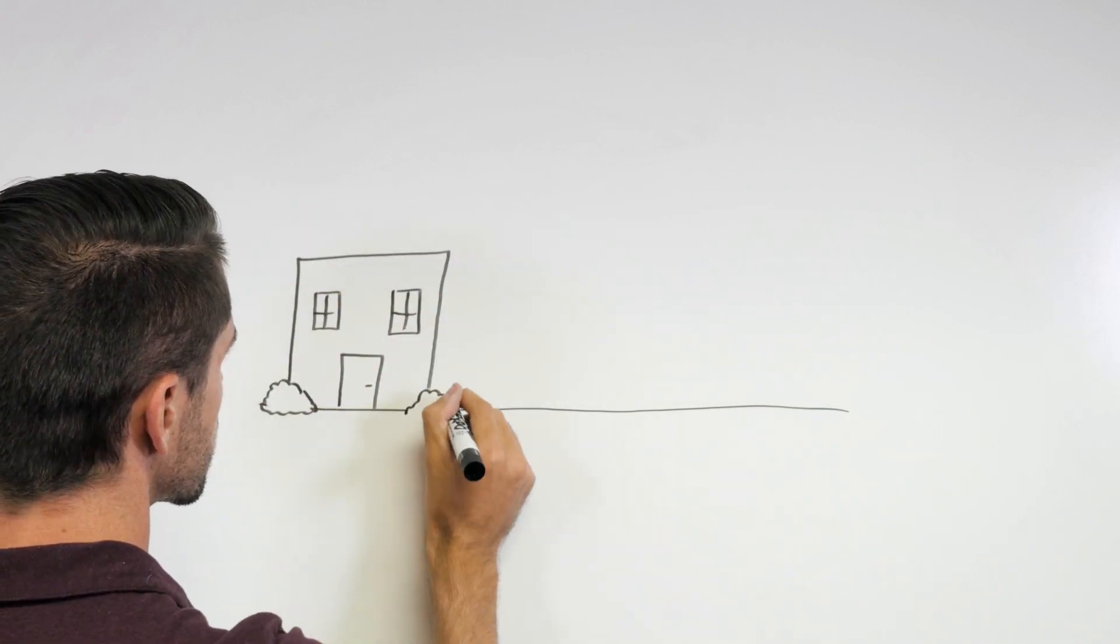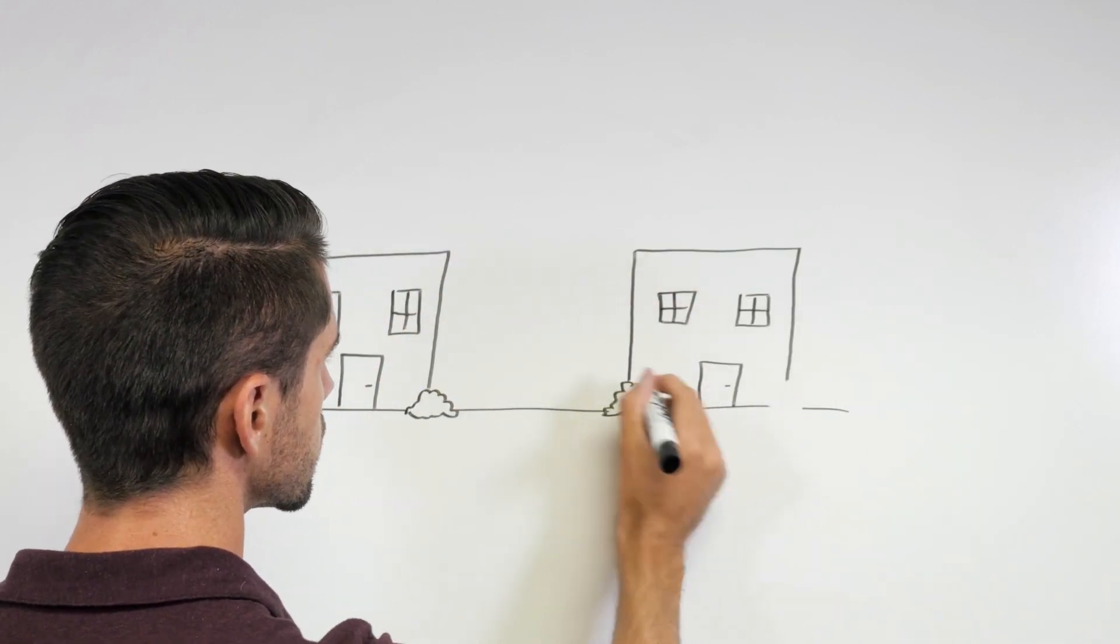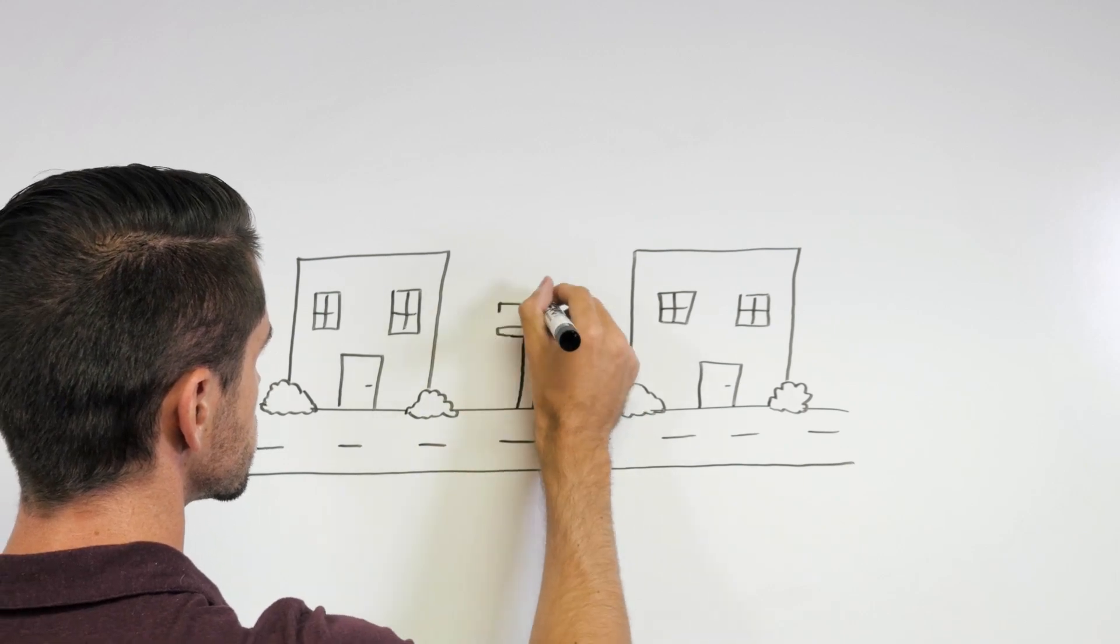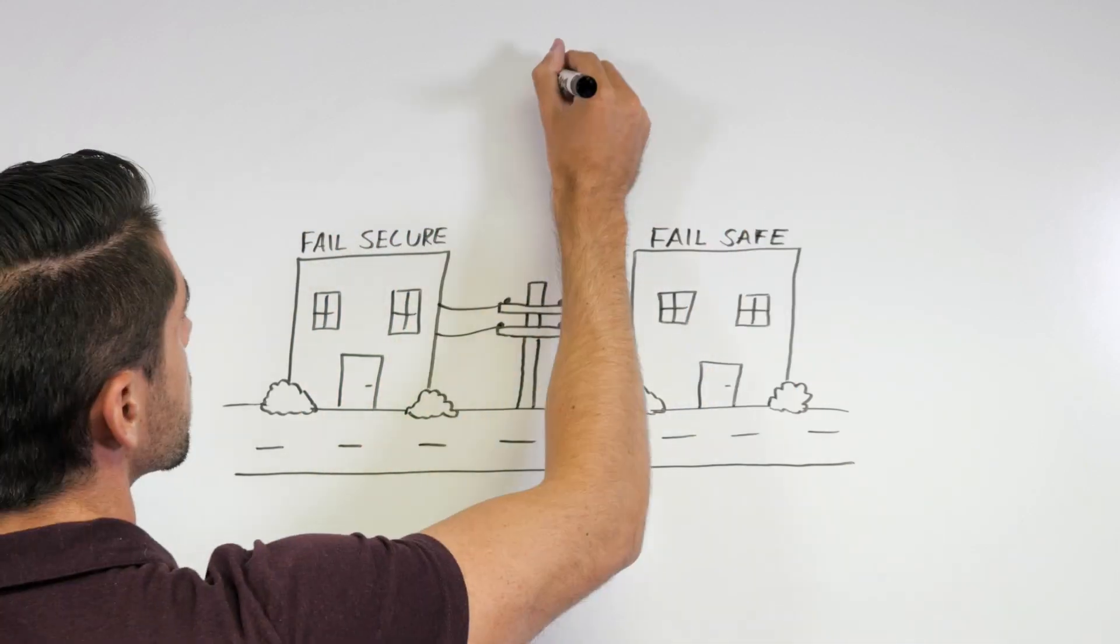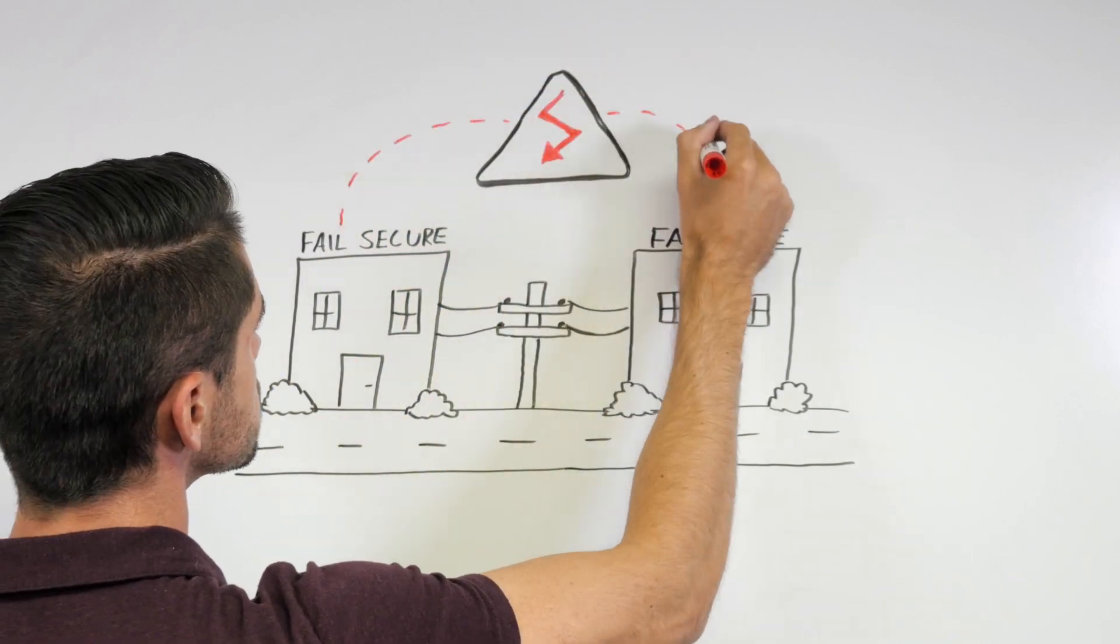In the world of electrified door hardware, knowing the difference between fail secure and fail safe is important. These two terms are used to describe how the door works from the key side with the presence or removal of electrical power to the locking mechanism.